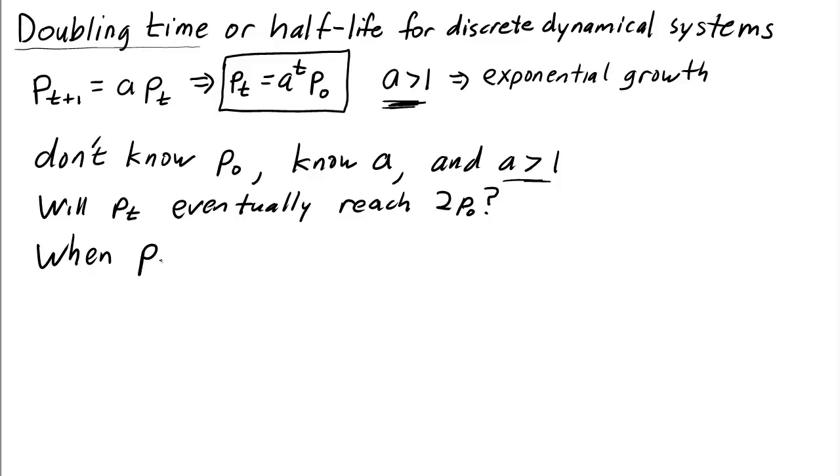It will do that when pt, which is a to the power of t times p0, is 2 times p0. Let's assume that p0 is not 0, or nothing's going to happen. So we started with some unknown initial condition, but it's a non-zero initial condition. If that is true, we can cancel p0 from both sides. We can divide both sides of the equation by p0, because it's non-zero, to get that a to the power of t must be 2.